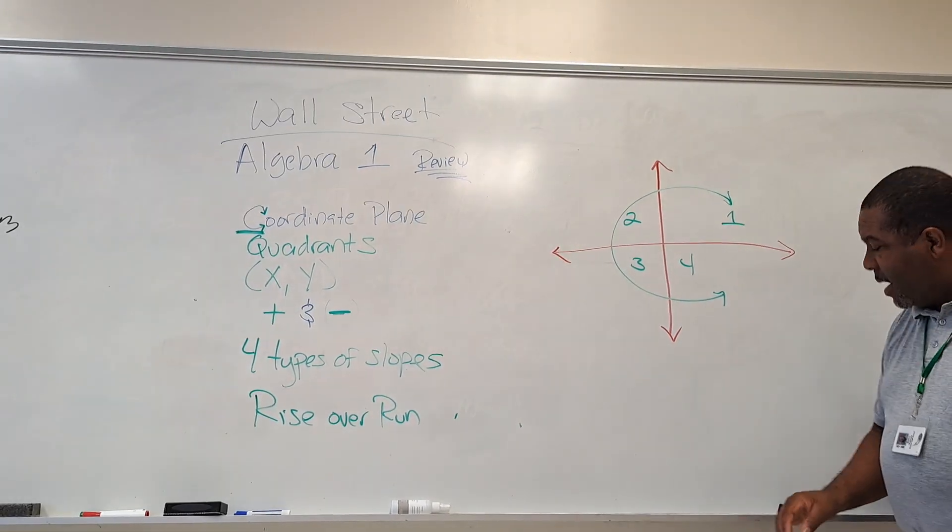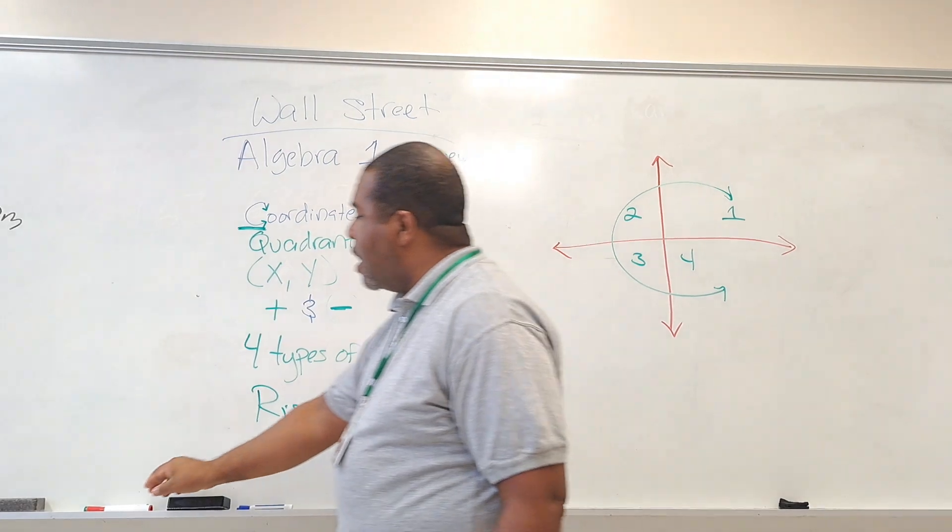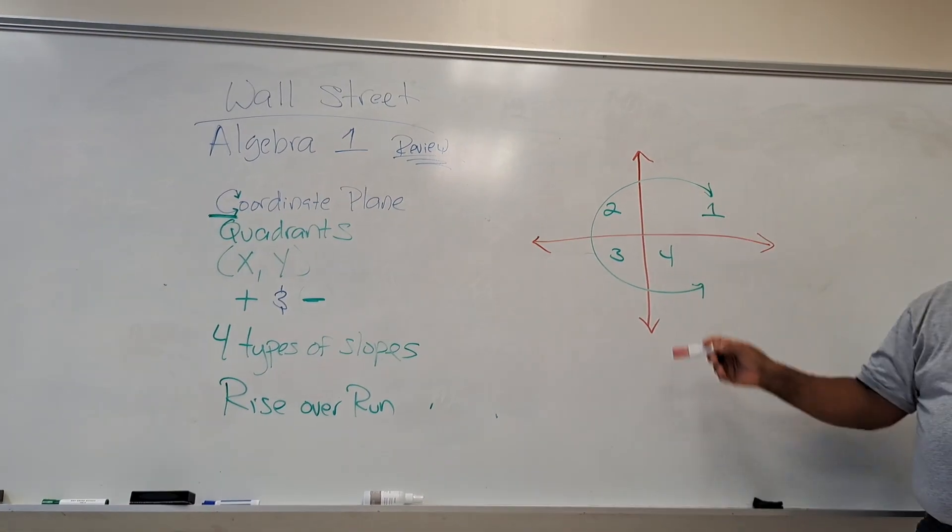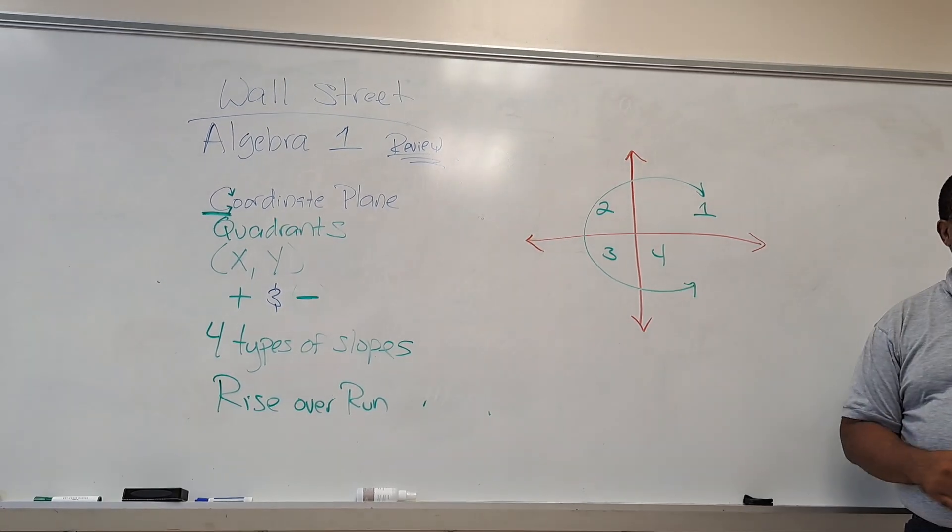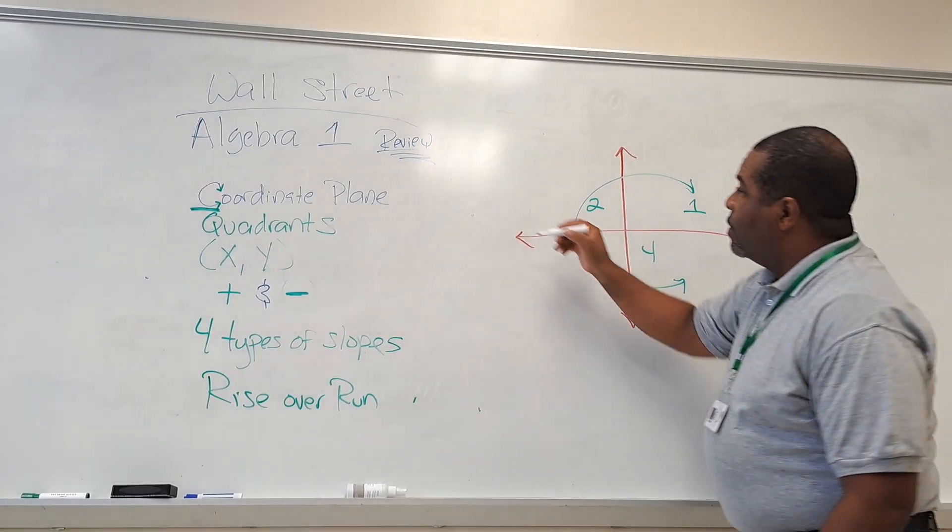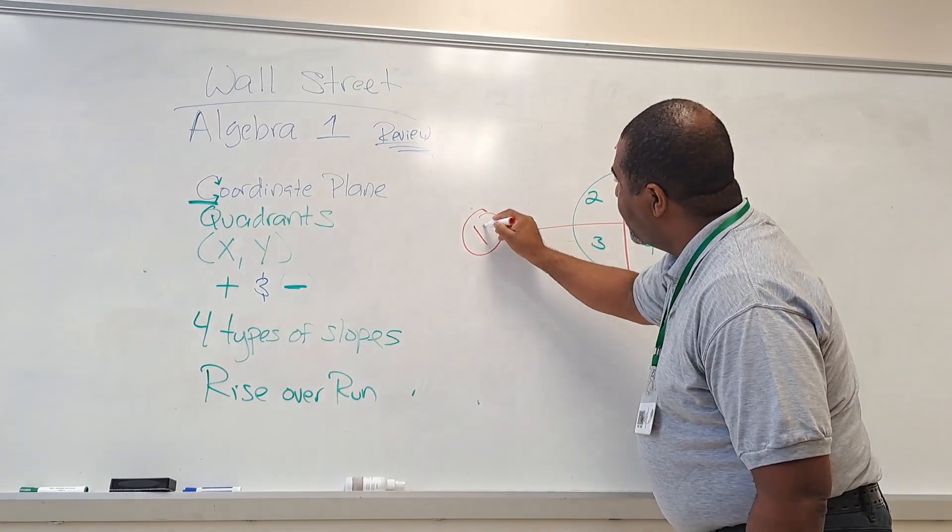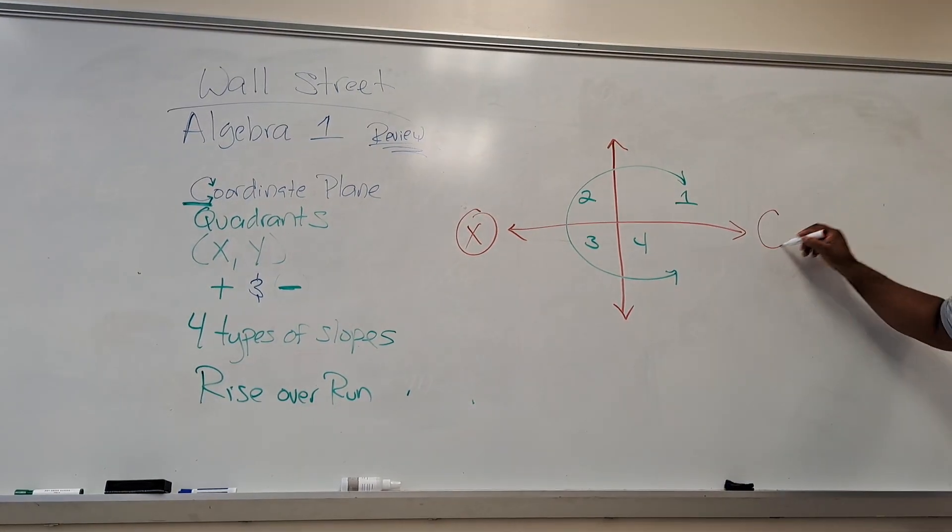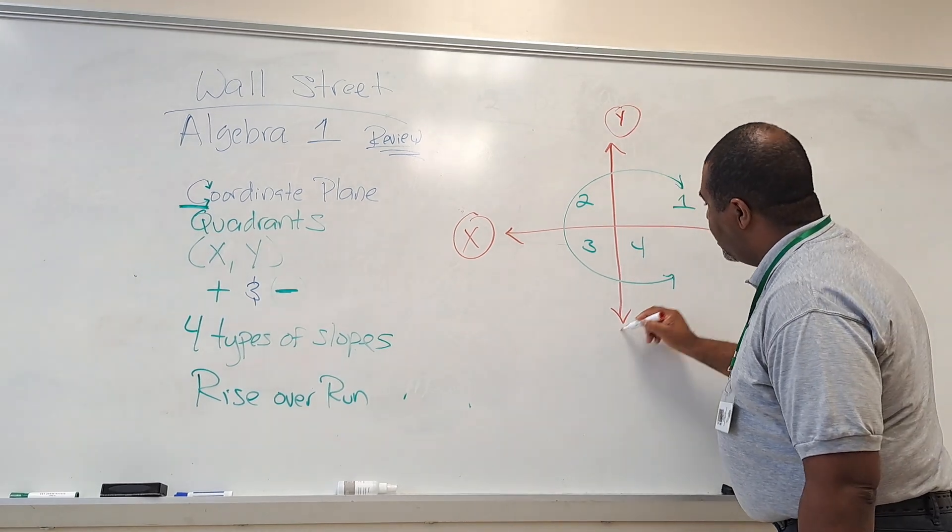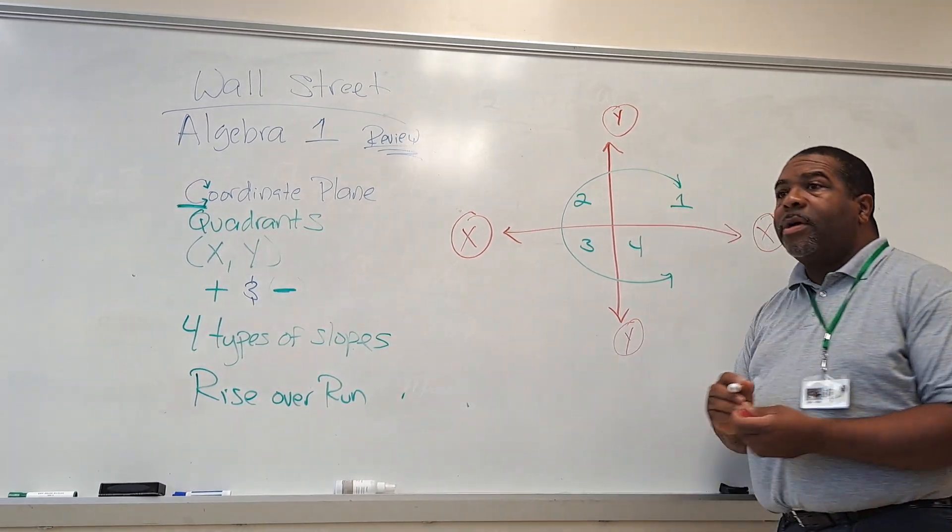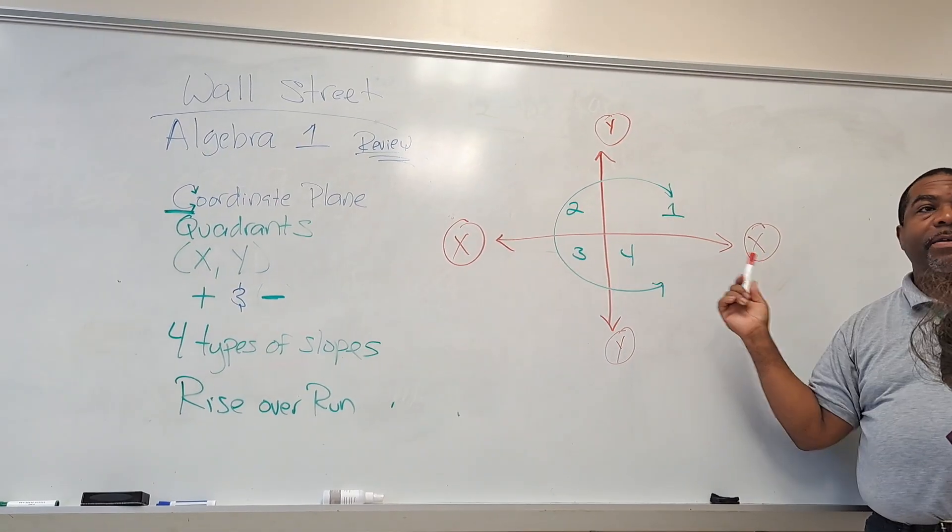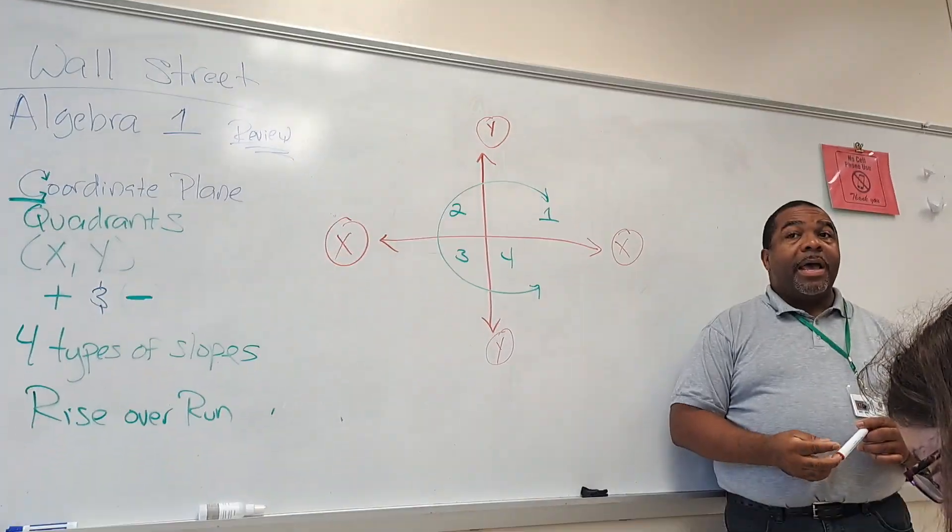So quadrants. Here's our four quadrants: one, two, three, four. Remember, it goes with a C. The X and Y. What's the X line? Is it up and down or is it left and right? Left to right. All right. So this is our X, which means that this is our Y. So when we talk about the X and Y, we're talking about up and down for the Y and left and right for the X.